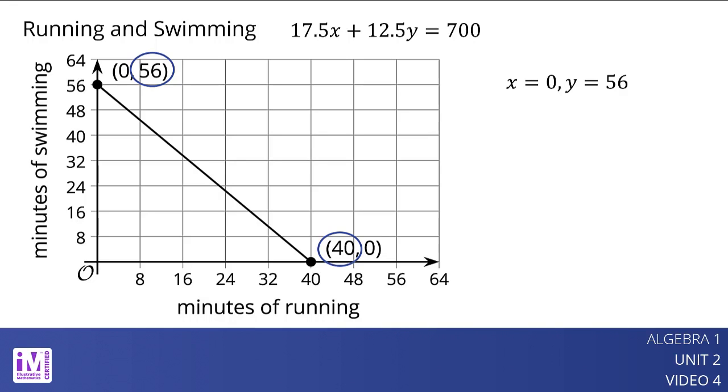If x is 0, the athlete does not run, he would need to swim for 56 minutes to burn 700 calories because 12.5 times 56 equals 700. If y is 0, the athlete does not swim, he would need to run for 40 minutes because 17.5 times 40 is 700.